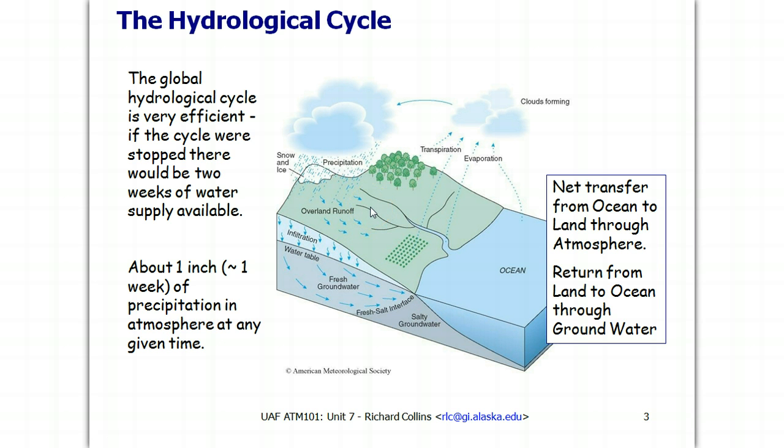If the cycle were stopped, there would be two weeks of water supply available. So there's not a lot of water being stored in the system in any one place. It's moving very quickly through the system. And there's about an inch of precipitation in the atmosphere at any given time, constantly being resupplied by the large pumping effect of evaporation and the large return effect of water back to the ocean through gravity.